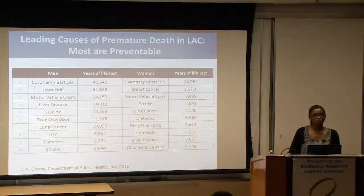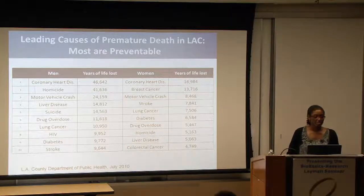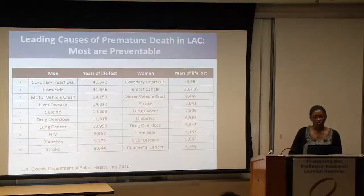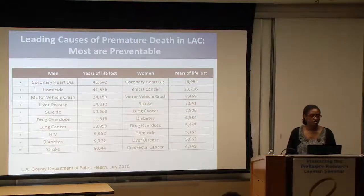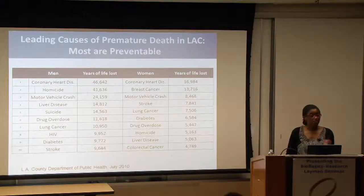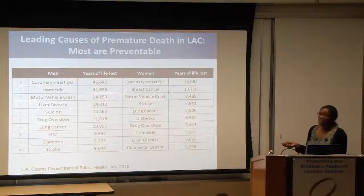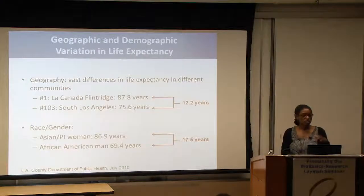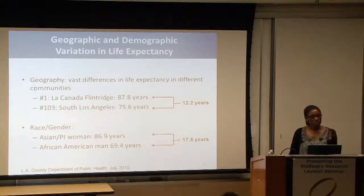This slide represents one of the big motivators behind the strategies being used by the CTSI. Published in 2010 by the Los Angeles County Department of Public Health, it shows the leading causes of premature death in LA County, and as you can see, most of these are preventable. Looking at years of life lost, for coronary heart disease among men it's 46,000 years of life lost; to homicide and motor vehicle accidents it's 65,000. For women, smaller numbers but still staggering. There's also a lot of heterogeneity in life expectancy by geography and race and gender.